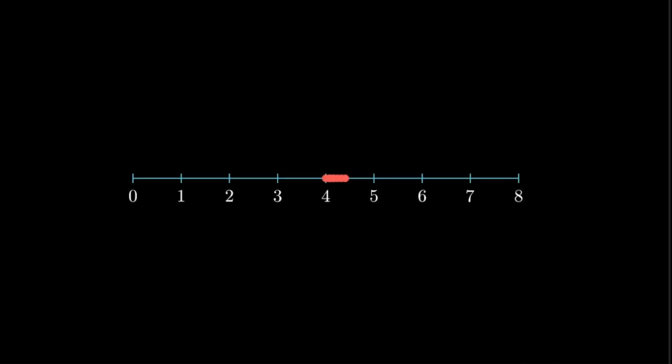We understand what variance means. In this example, if you have captured the distances that you have run during your morning run and plotted them on a number line and if it looks something like this, this can be called as a data set with a very low variance. That is because all these data points are very close to the mean.